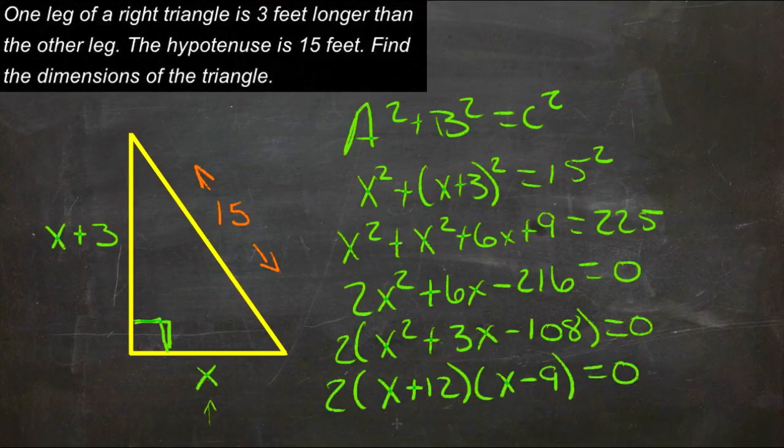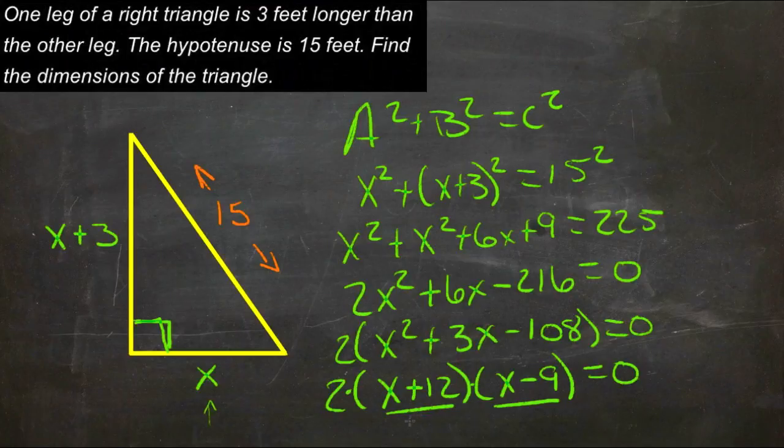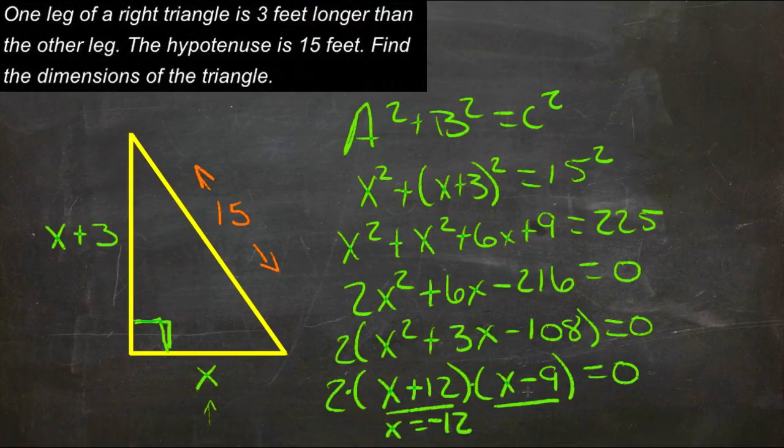The 2 is just hanging out here, it's not going to be part of any solution. But since we have three things multiplied together, as long as either one of these ends up being 0, the statement will be true. So we have x plus 12 that needs to be 0, which means that x could be negative 12, or we have x minus 9 that needs to be 0, which means that x could be positive 9.